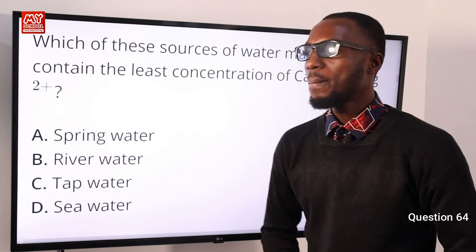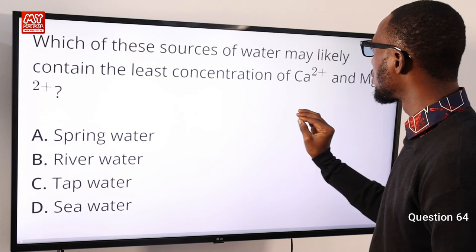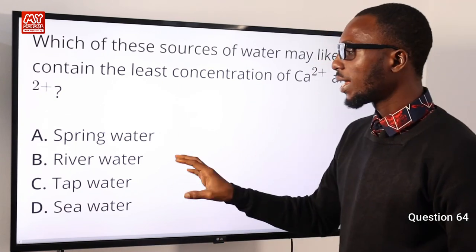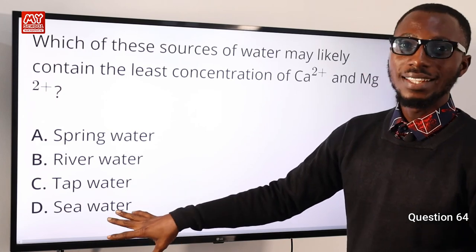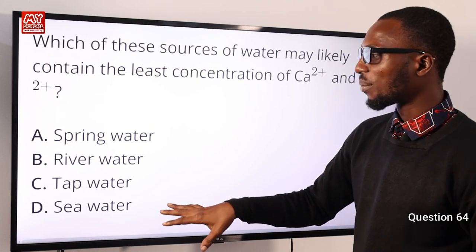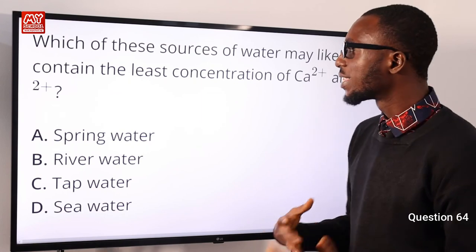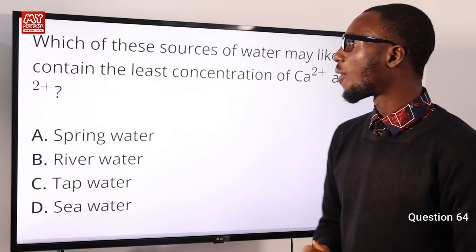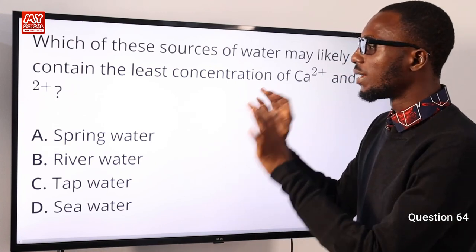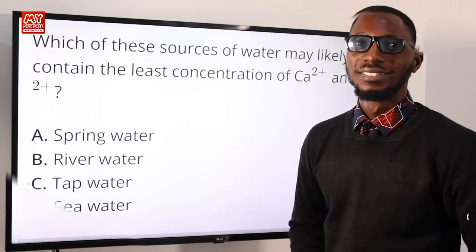Question 64: Which source of water may likely contain the least concentration of calcium and magnesium ions? Sea water, tap water, and river water are all hard water. Spring water from its source should contain the least amount of calcium and magnesium ions. Option A is correct.